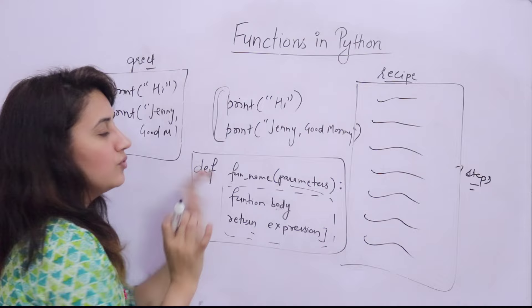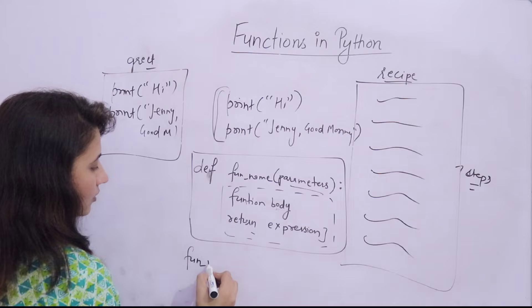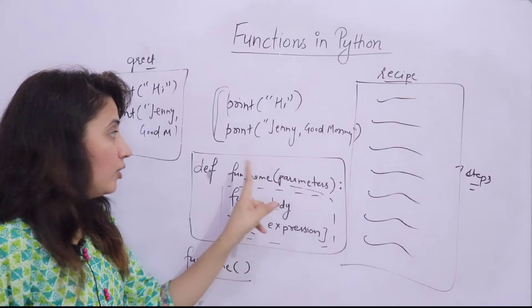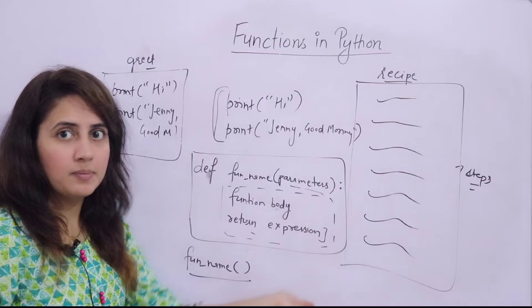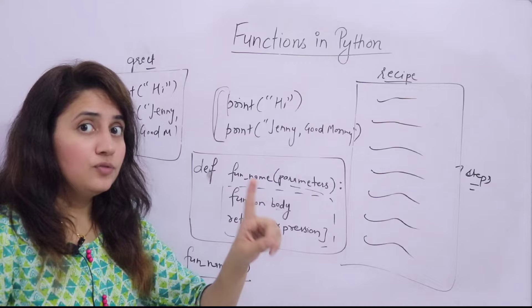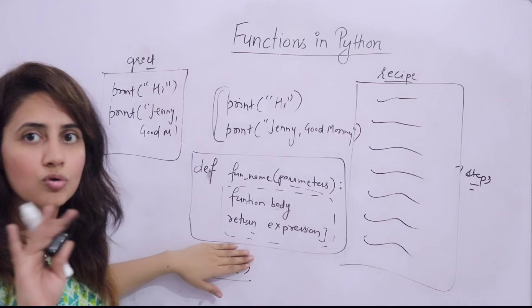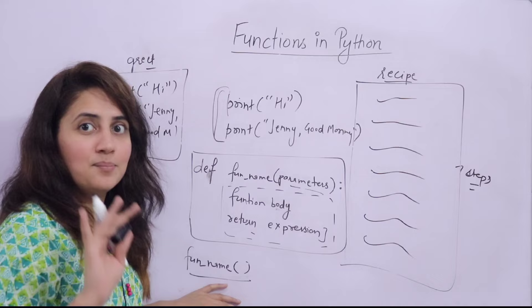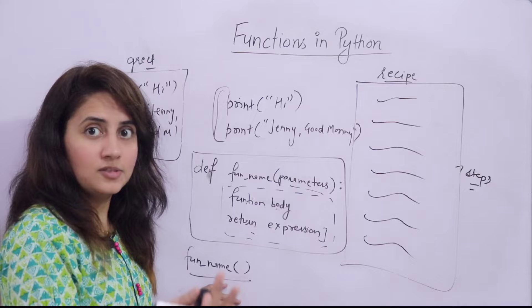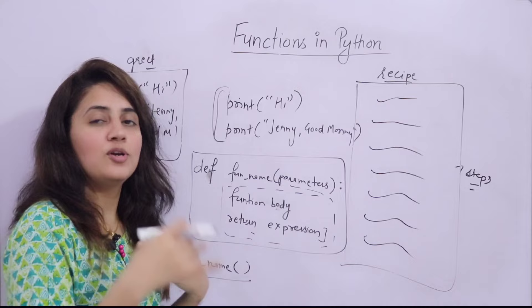How to call the function? Just write the function name followed by parentheses. If you used parameters when defining the function, pass those arguments here. If there are no parameters, just function name and empty parentheses. A function will only work when you call it — only the definition is not enough. Like me as a teacher: I only act as a teacher when I'm in front of my students. They are calling me, so at that time I work as a teacher.